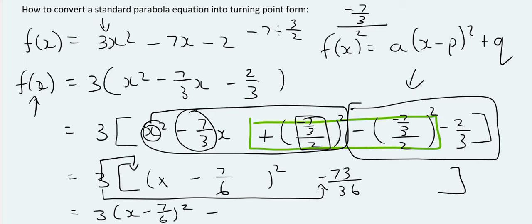And so, then you say 73 over 36 times by 3. And that's going to give us negative 73 over 12. And there we're done. So, your turning point would be 7 over 6 and minus 73 over 12.